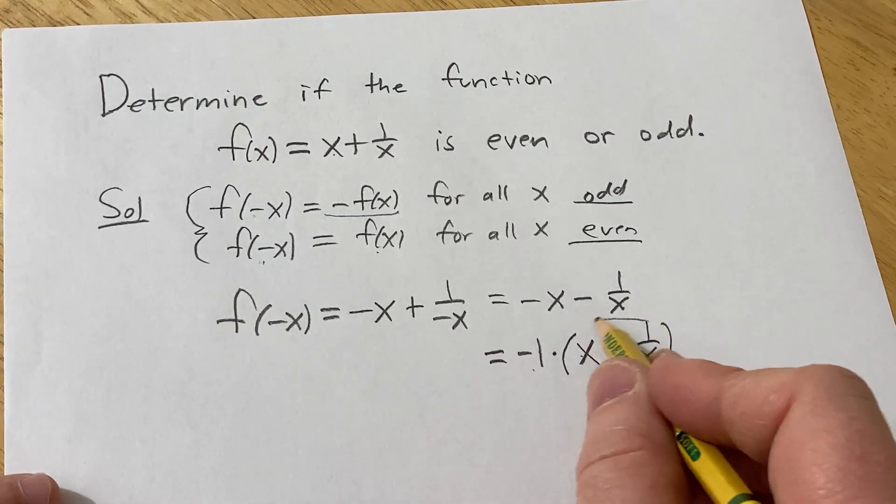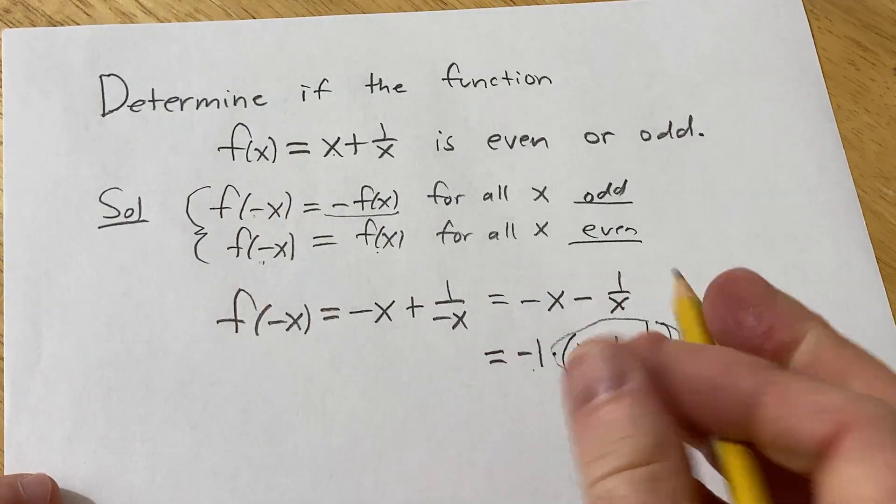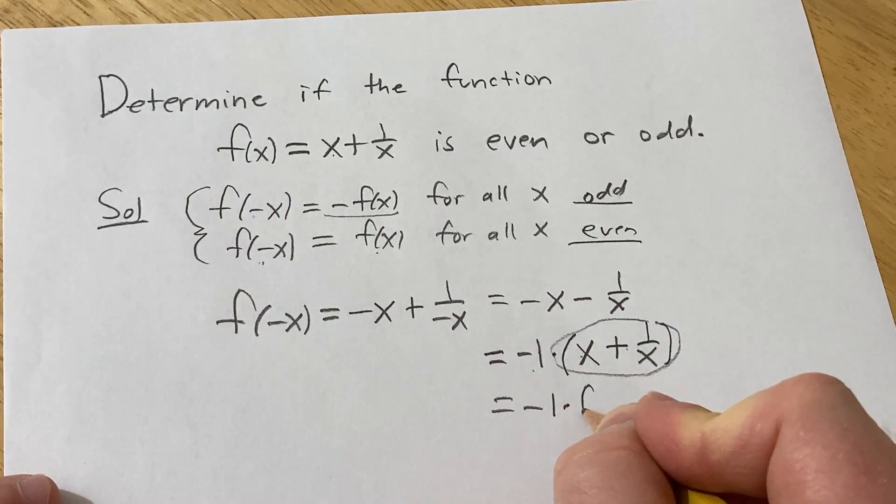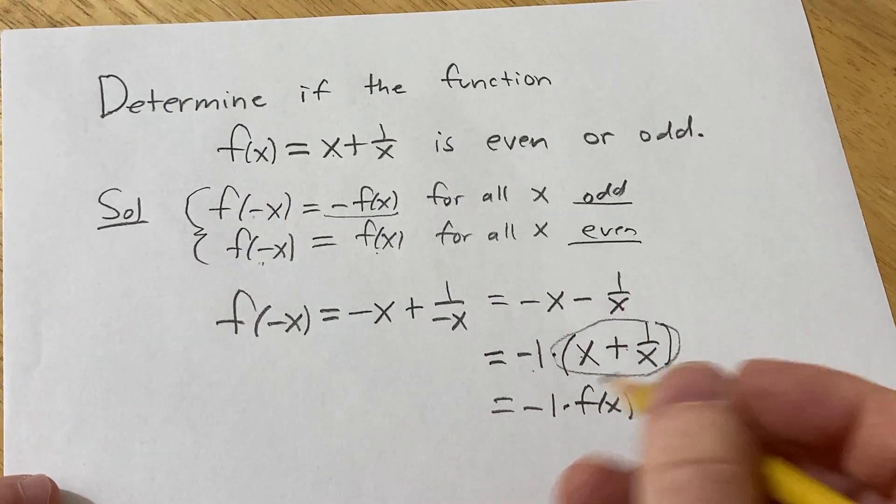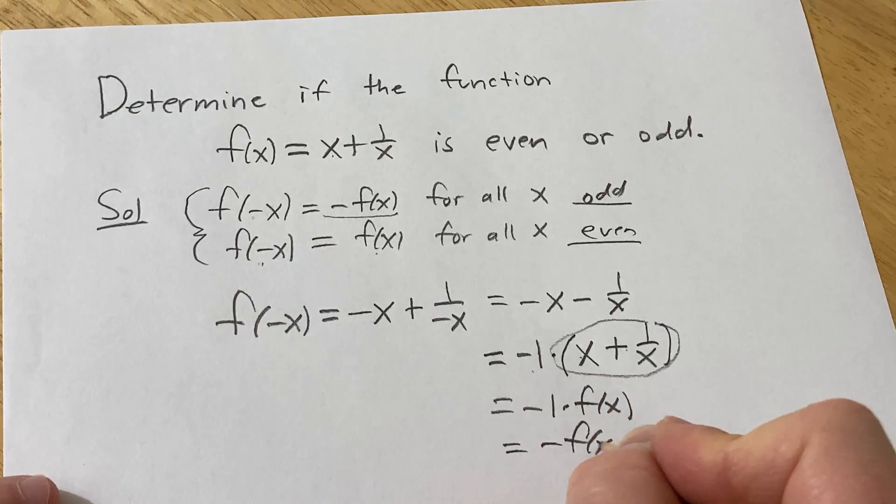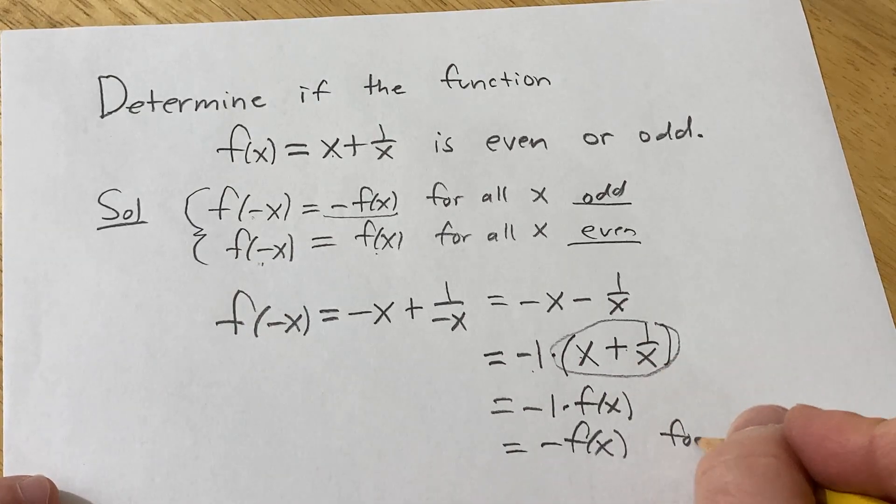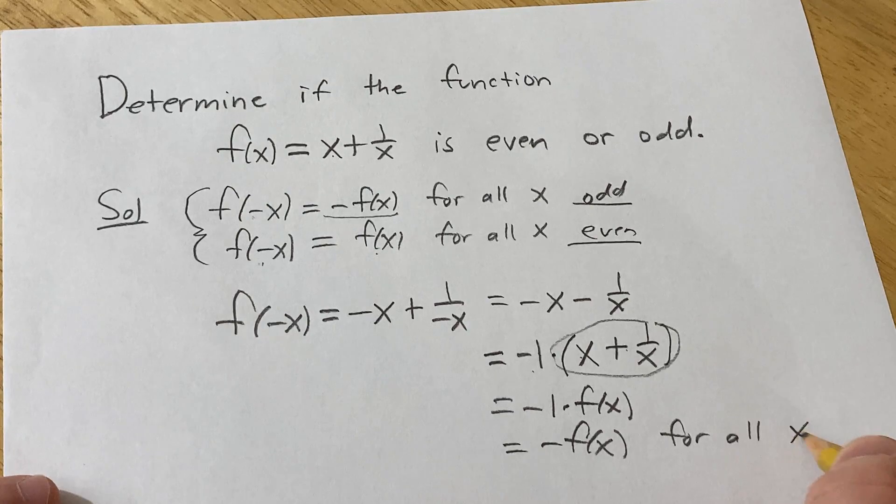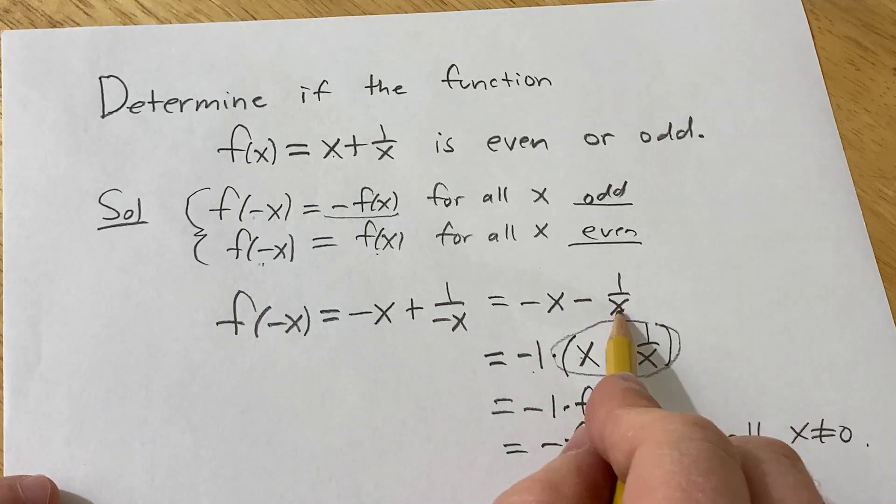But this is special. This is f(x), it's what we started with. So this is negative 1 times f(x), which is the same thing as negative f(x). And this is good for all x not equal to 0, because 0 is not in the domain.